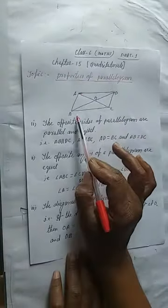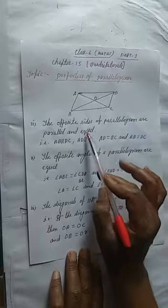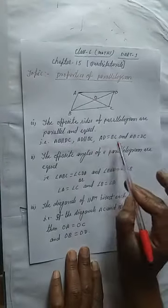And AD, AD parallel to BC. Now in the case of equal, we can write AD is equal to BC. Means AD is equal to BC.